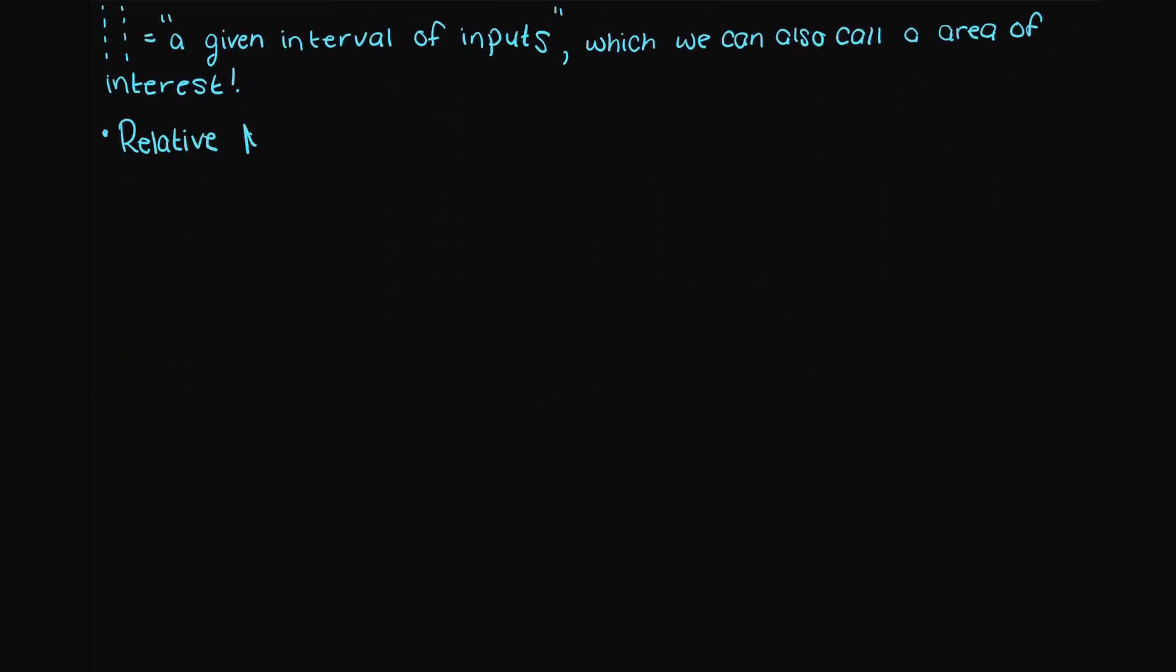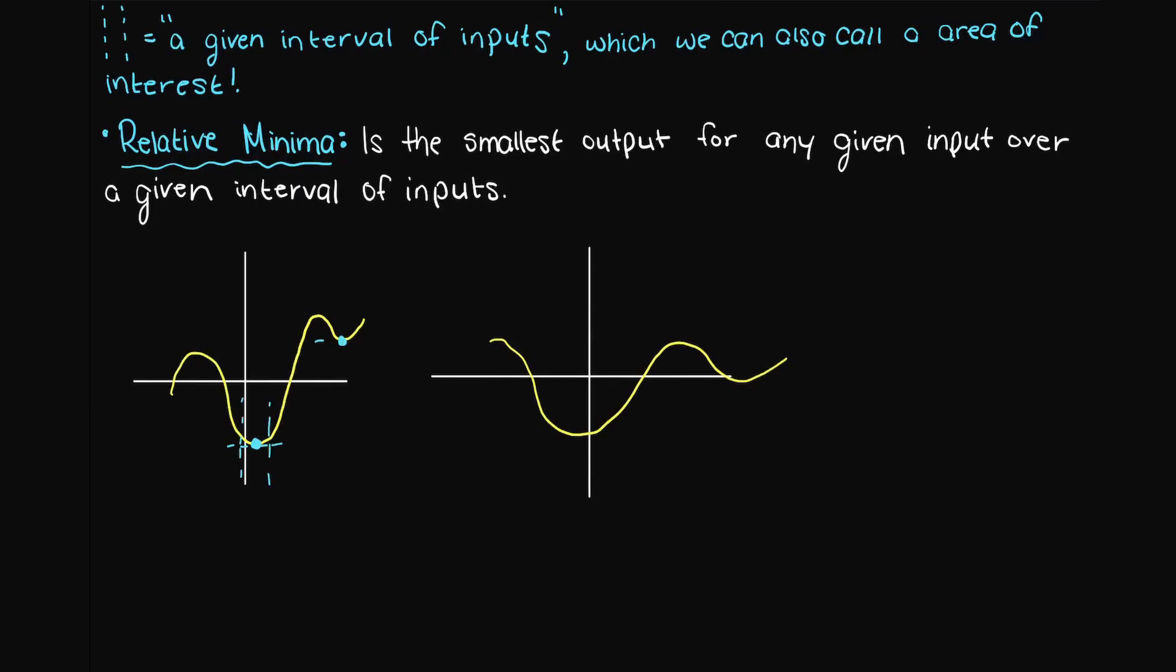What about the relative minima? Well, as one may expect, it is the opposite of the relative maxima. The relative minima of a given function is the smallest output for any given input over a given interval of inputs. These can be thought of as valleys of our function. So the relative minima is the lowest possible point on our graph over our area of interest.